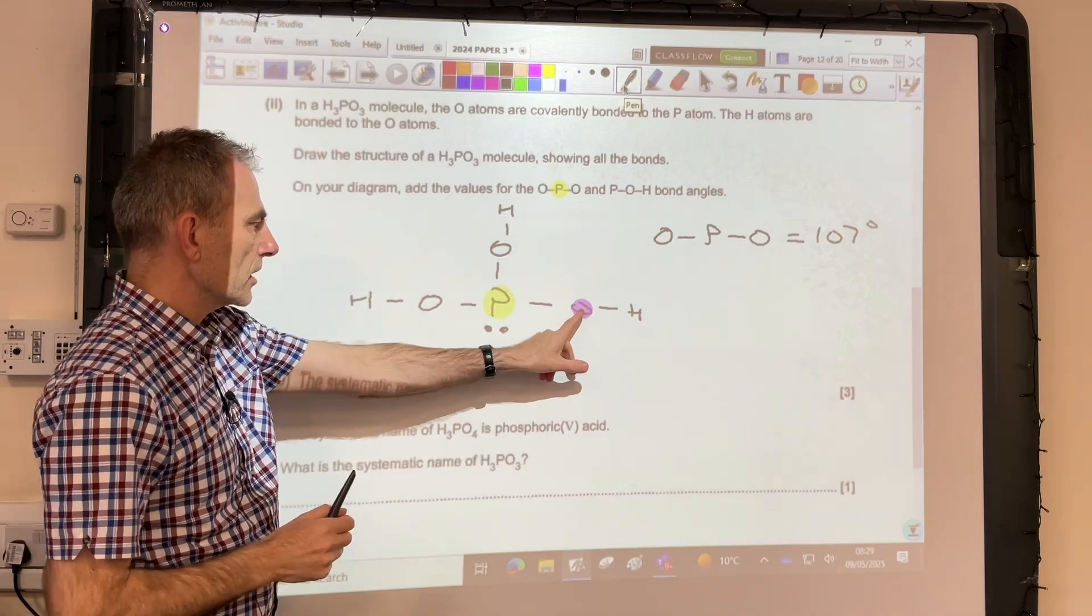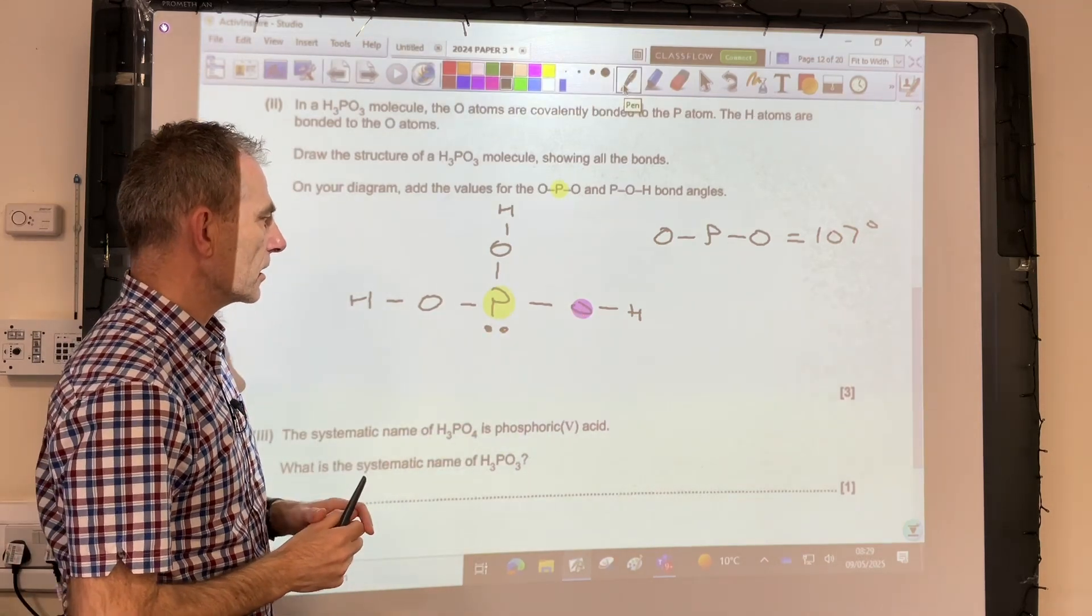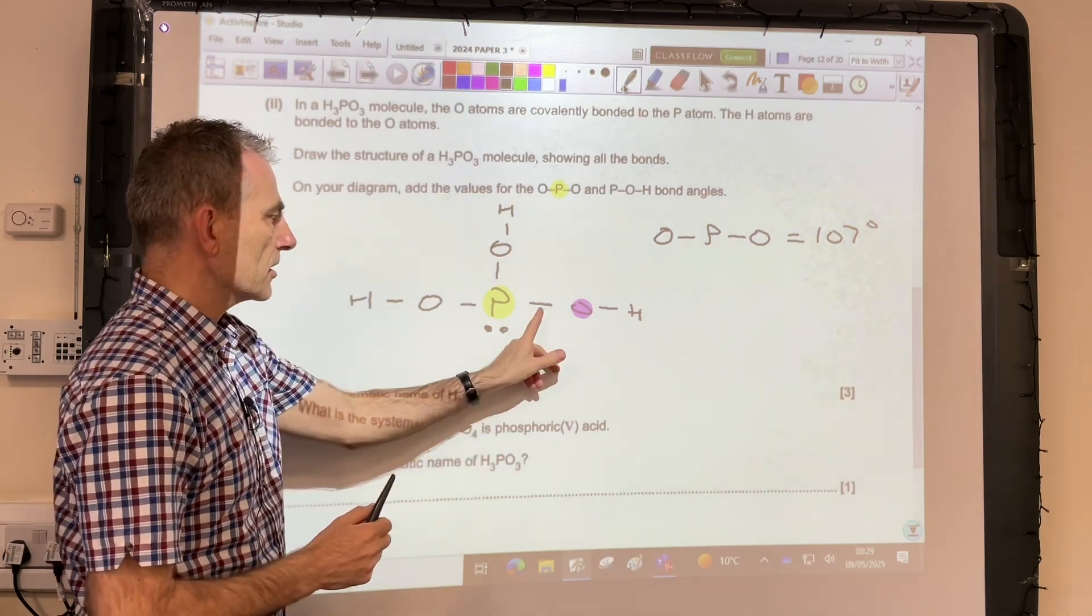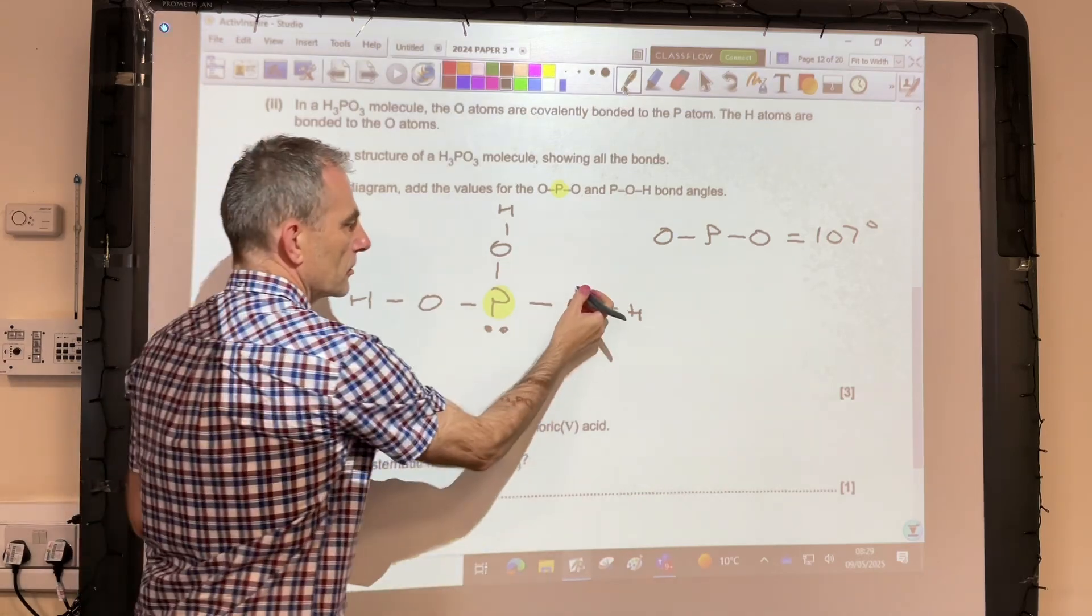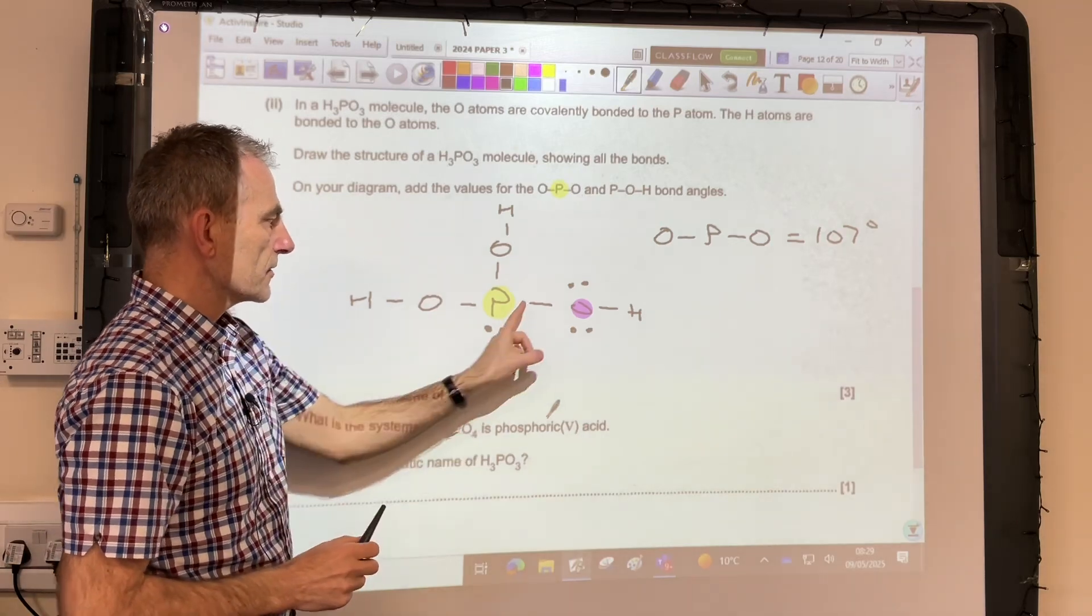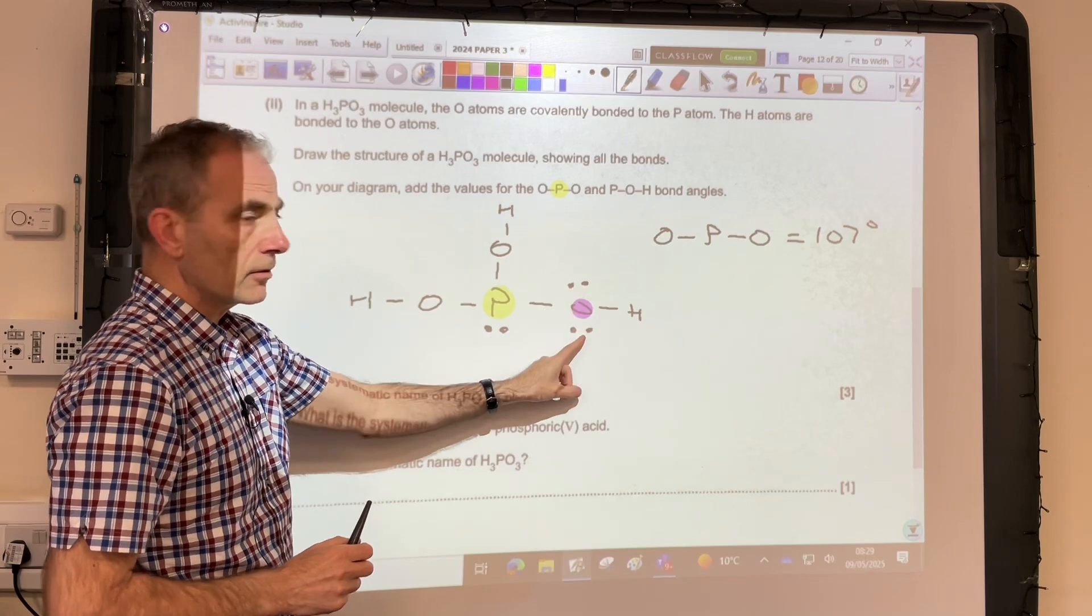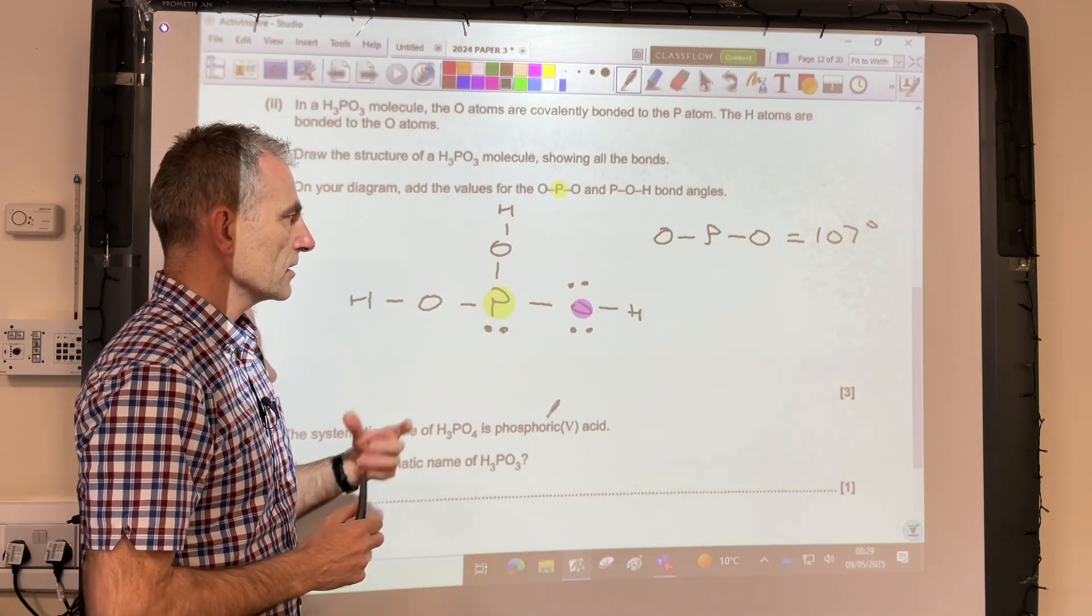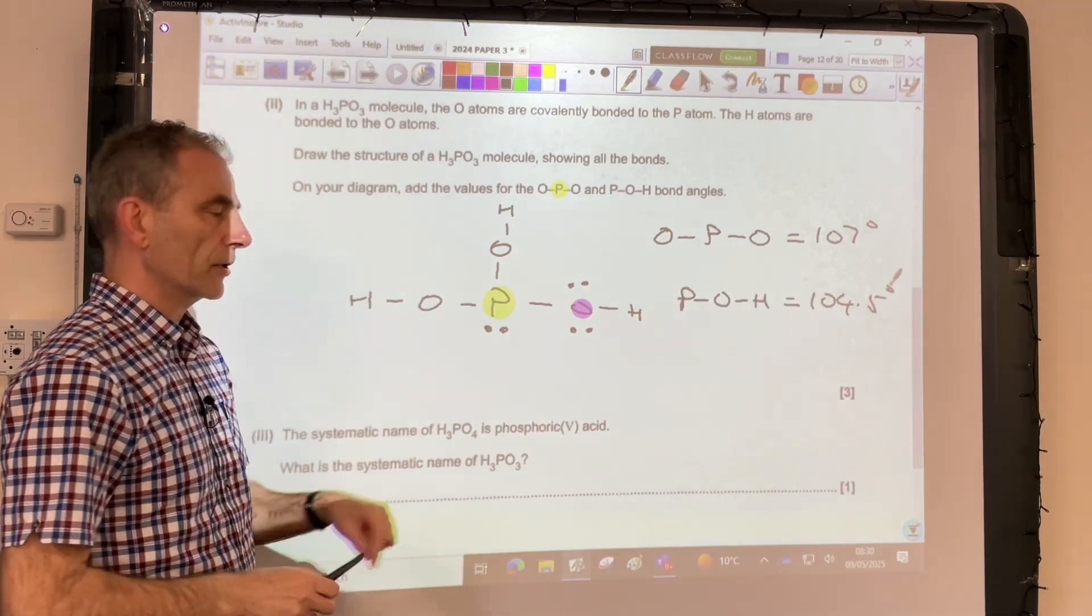So moving on to the POH angle, so we'll just use this oxygen here to explain this one. So oxygen's in group 6, 6 valence electrons. It's using 2 in those 2 single covalent bonds. So the oxygen's got 2 lone pairs around it as well. So we've still got 4 electron regions around there, but we've got 2 lone pairs. So we're going to take 5 degrees from the 109.5 starting angle, which means that that angle is 104.5 degrees.